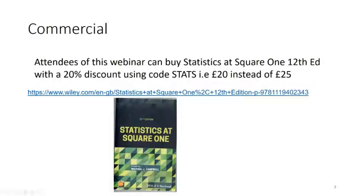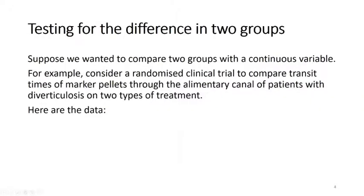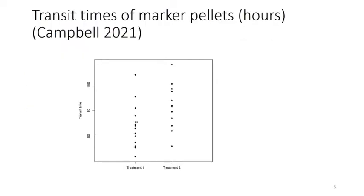We'll talk about the fundamental thing that statistics does, which is to compare two groups. Suppose we want to compare two groups with a continuous variable. The example I use in the book is a randomised clinical trial comparing transit times of marker pellets through the alimentary canal of patients with diverticulosis on two types of treatment. The first rule of all statistics is to actually look at the data — so here they are. Low transit times are actually good, and we're comparing those two treatments.